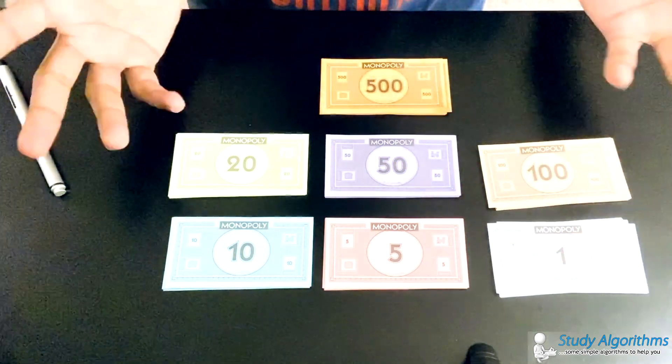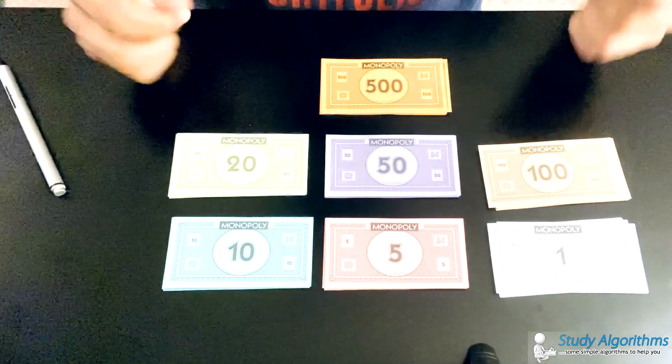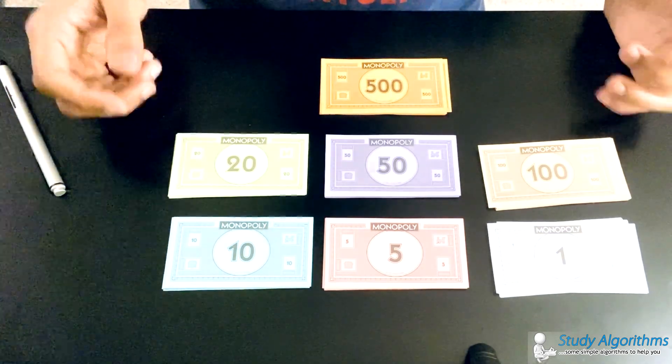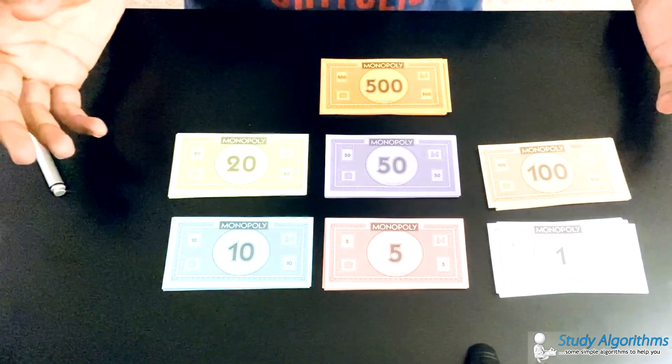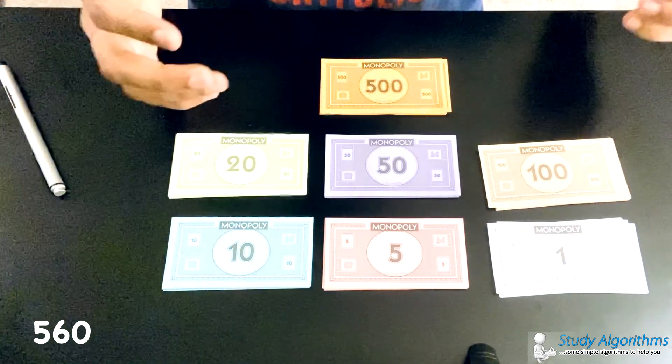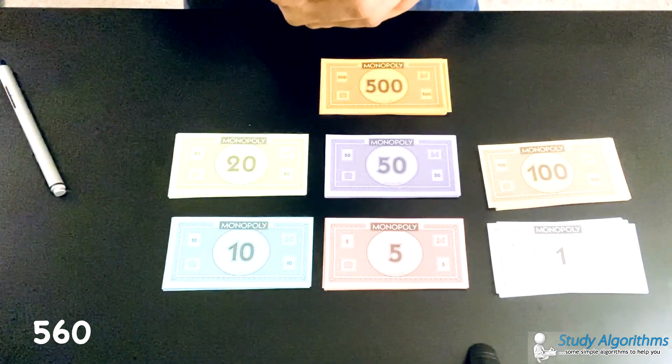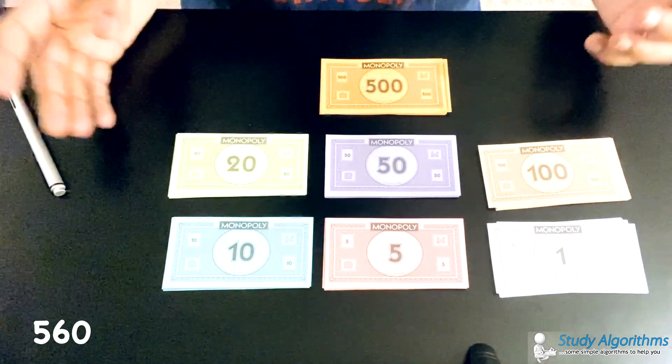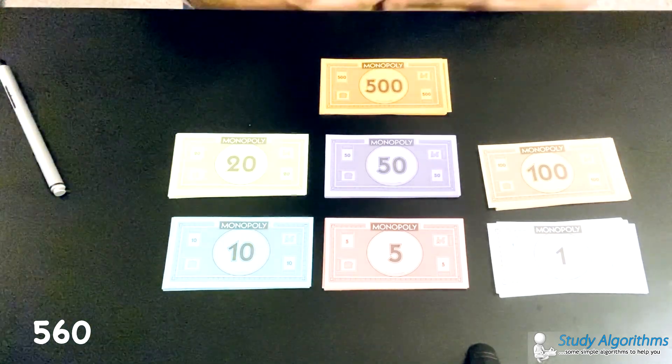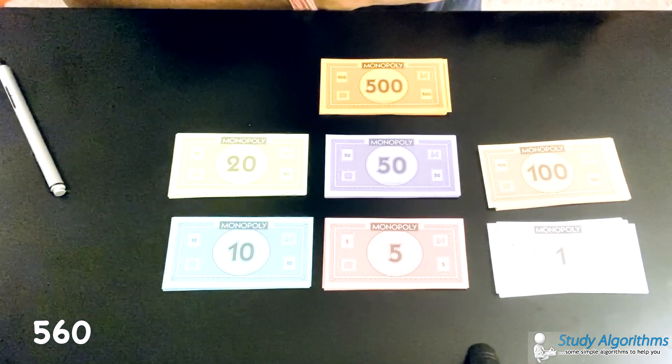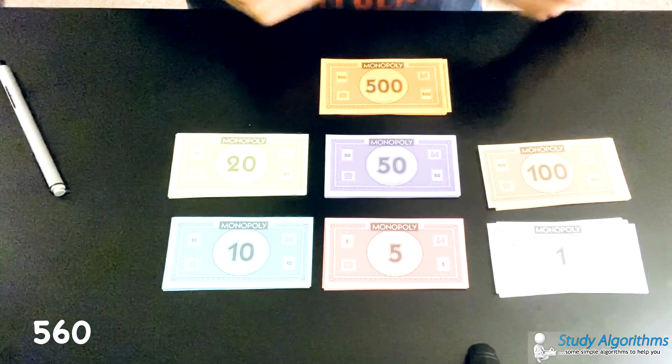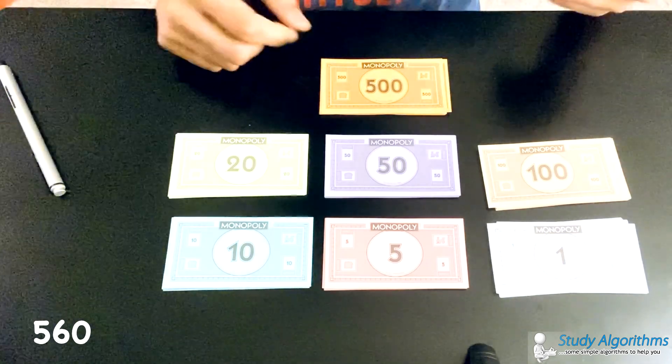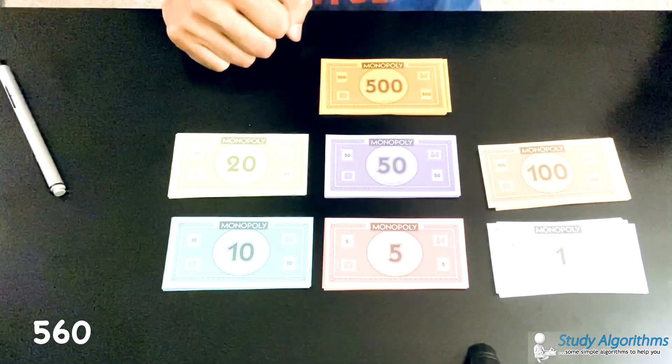When does a greedy algorithm come into the picture? Just like Monopoly, in most currency, if I ask you give me 560 rupees, the best way to give the minimum amount of currency notes is start with the highest currency note that you can find and go on to the bottom until you can't find any other currency notes. So, you have to give 560 money to somebody. The biggest note available here is 500.